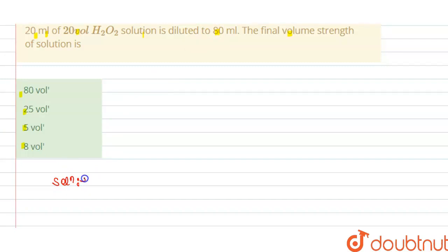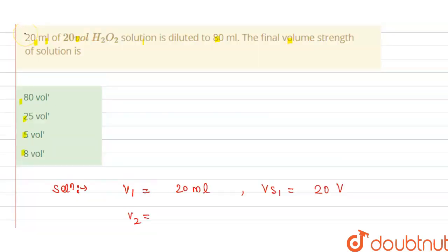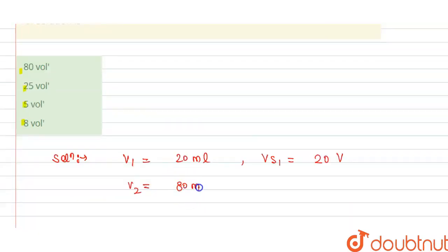this question is: we have given here V₁ = 20 ml and volume strength VS₁ of this solution is 20 V. We have given here V₂ = 80 ml, and we have to find the volume strength of the second solution, or we can say the final solution.